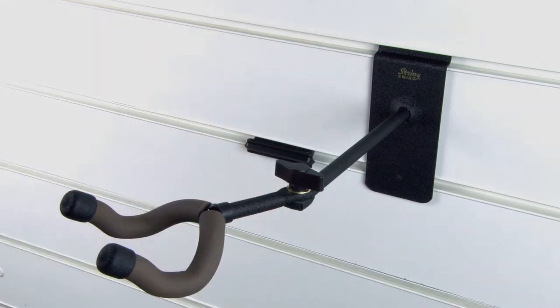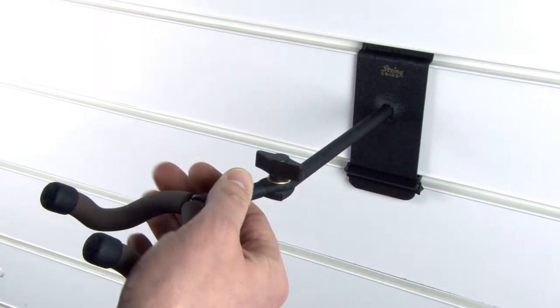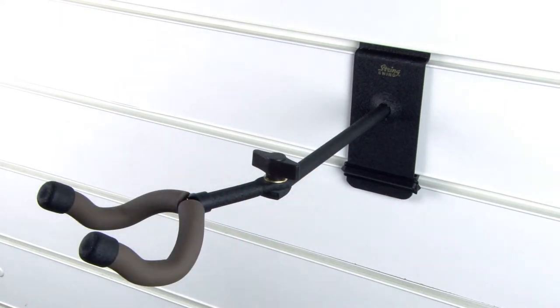String Swing's new hanger clip keeps your instruments safe. Just place the plastic clip on the slatwall to the left of your hanger, then open the clip and slide it across to the base of the hanger which is now secure.